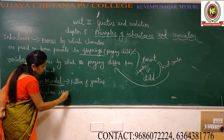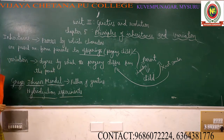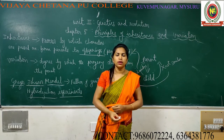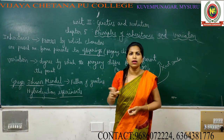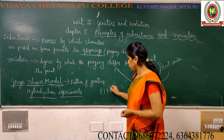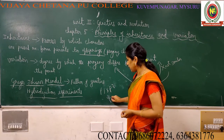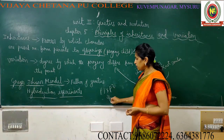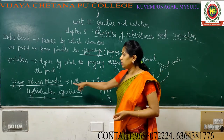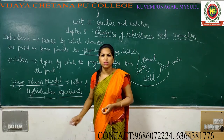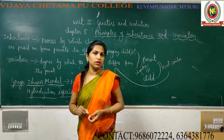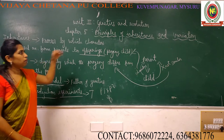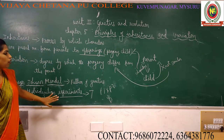Mendel conducted hybridization experiments. In hybridization experiments, a hybrid is formed — a combination of two different characters. If you cross plant 1 with plant 2 and get a new plant 3, that plant has characters of both plant 1 and plant 2, so it is called a hybrid. Mendel conducted hybridization experiments for 7 long years and then proposed principles of inheritance.